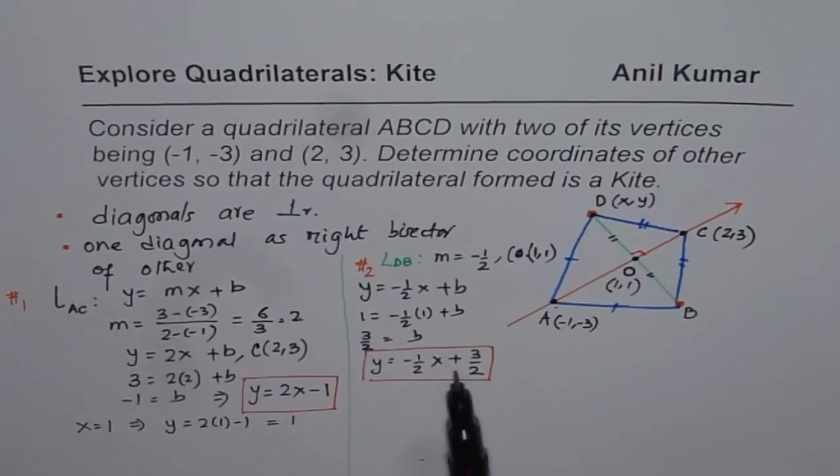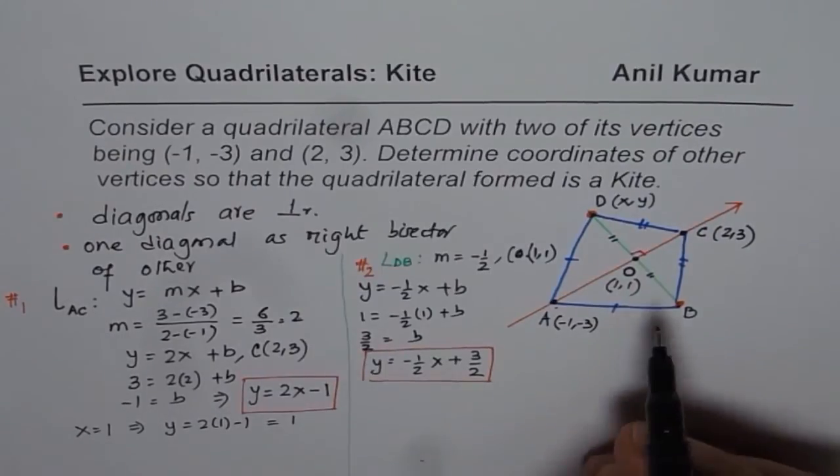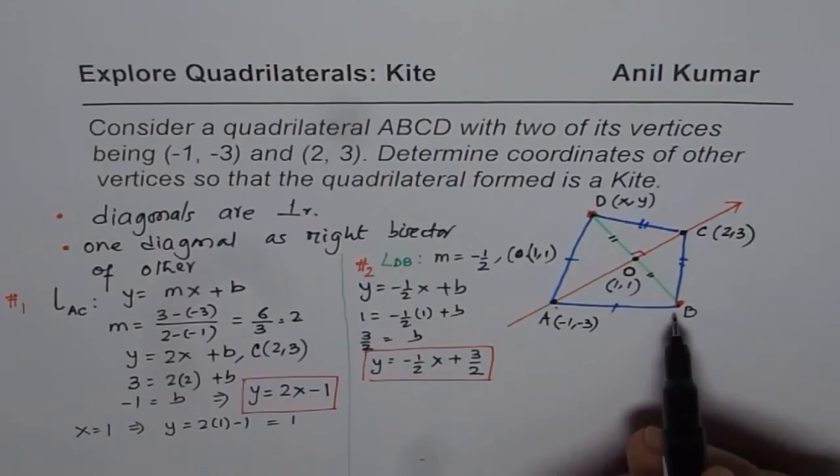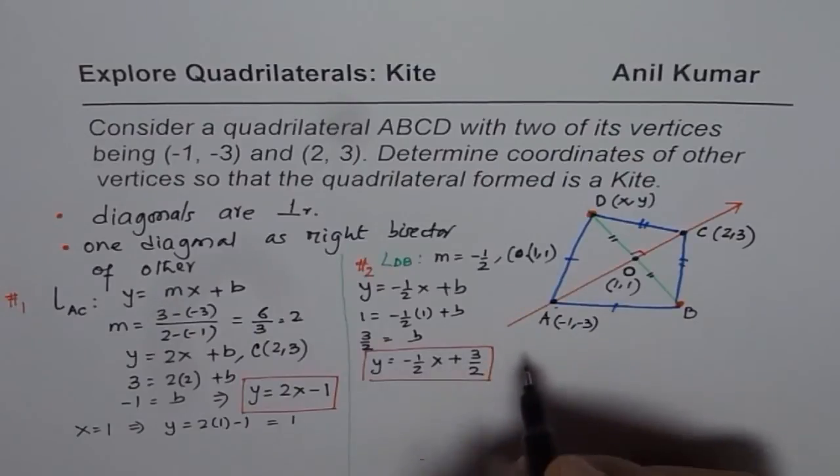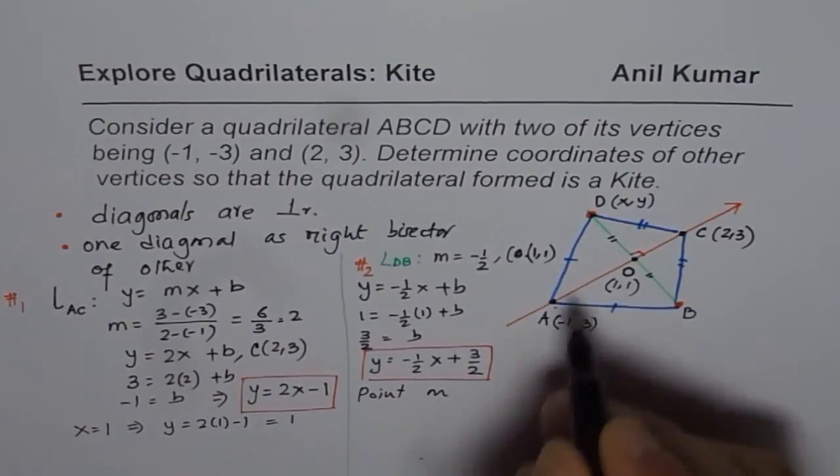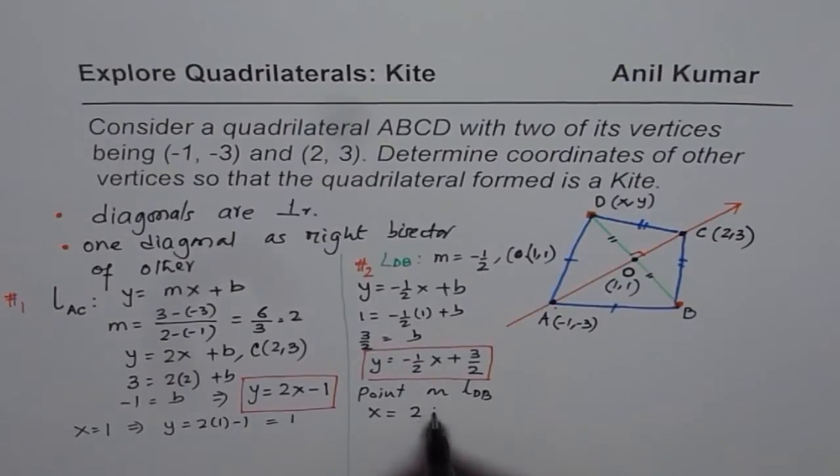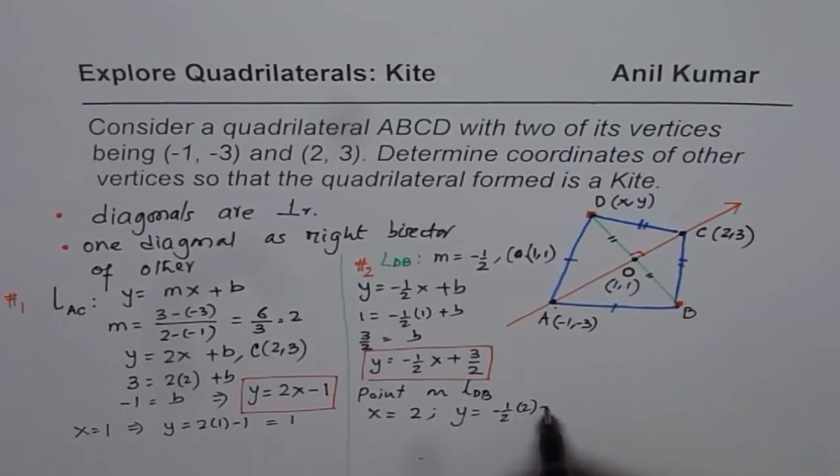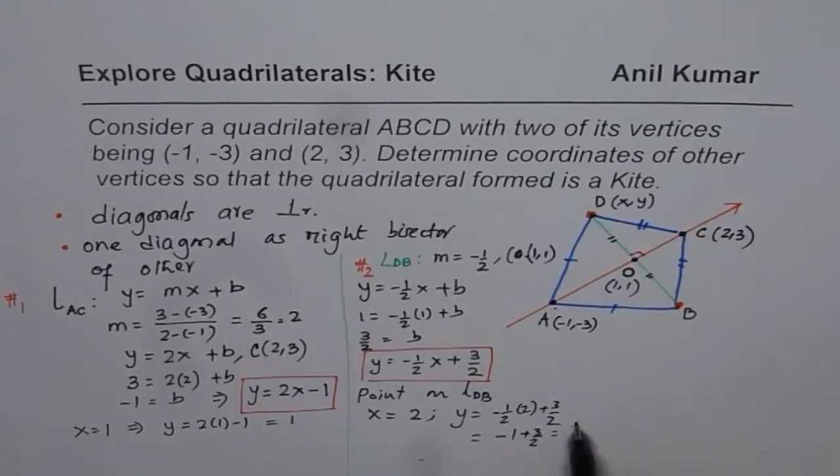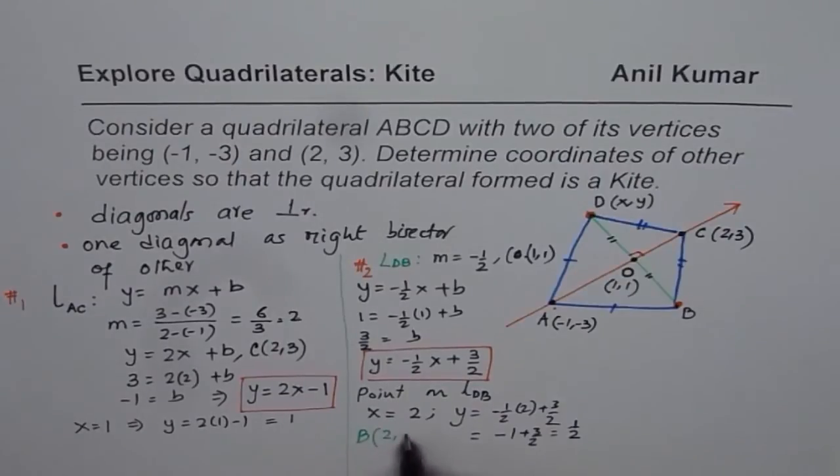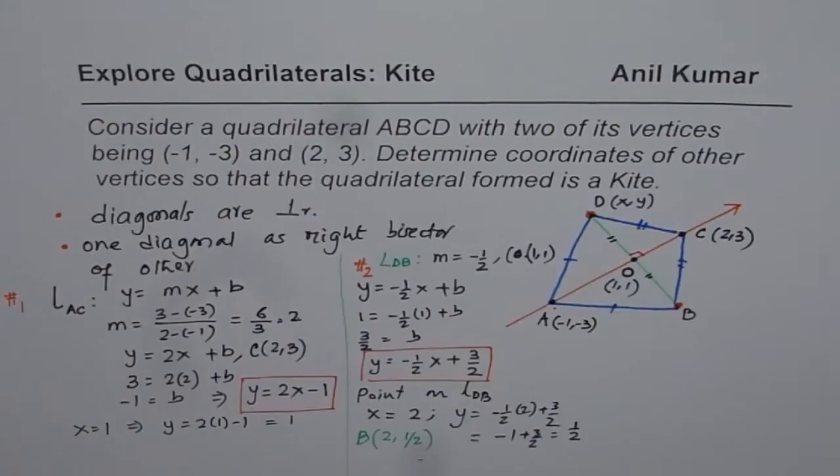So now we have equation of both these lines with their point of intersection also. So now we need to find 2 points on the second diagonal so that we can form a kite. So for that what we do is, we again assume a value of X. We assume a value of X because point on line DB means you can assume any value of X. Let X be equal to, X equals to 2. In that case, Y will be -½ times 2 plus 3 over 2. And that gives me, that is -1, -1 plus 3 over 2. That is ½. So we get a value of Y as ½. So we get X as 2 and Y as ½. Point B as 2 and ½. 0.5. That is the Y value.